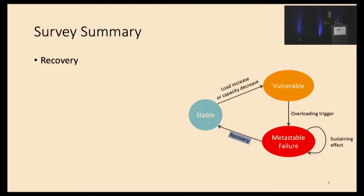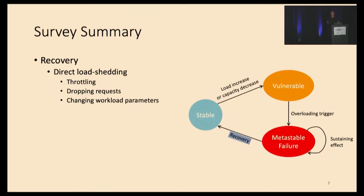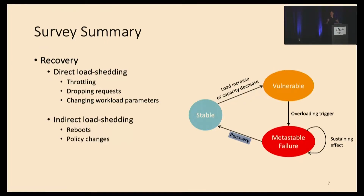Recovery is usually related to load shedding, and there are two types. One is direct load shedding, where people do throttling, dropping requests, or changing workload parameters. Indirect load shedding is also popular, such as rebooting to clear up queues and backup logs, or policy changes such as disabling machine learning features to trade off accuracy for performance.